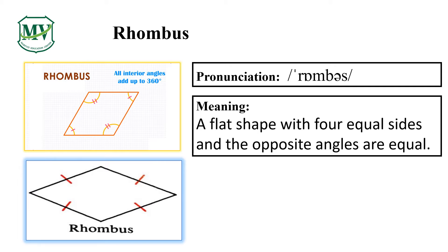Next, please say the word with me: rhombus. Can you read the meaning with me? A flat shape with four equal sides, and the opposite angles are equal.